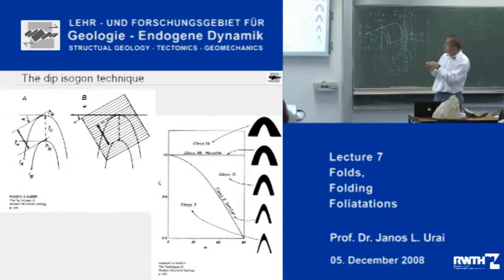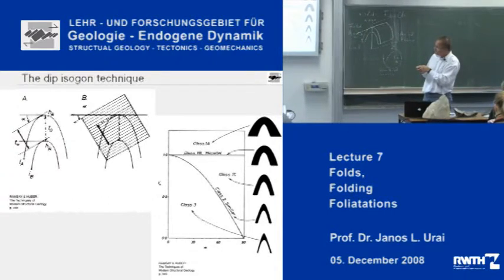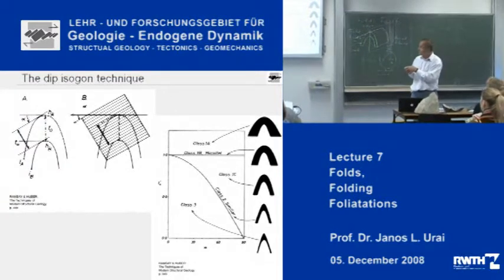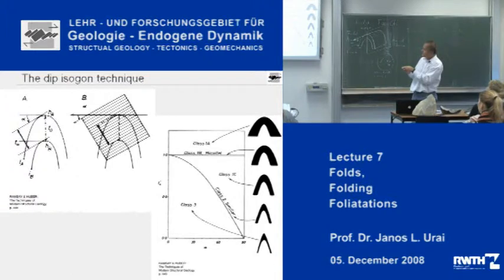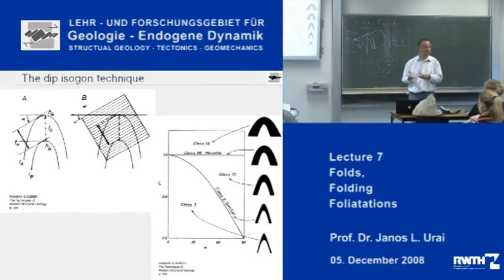And then you put a little grid on it, and you measure the distance between the layer — between the line that is touching the outside and the other line which is touching the inside of the fold. You measure this distance. And then you turn your grid, and you measure it again. And every time you write down this angle alpha, which is the angle of the grid and some kind of a reference direction. And then what you do is you plot this alpha against thickness.